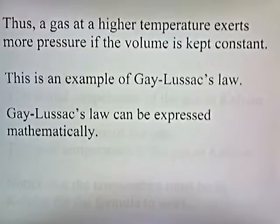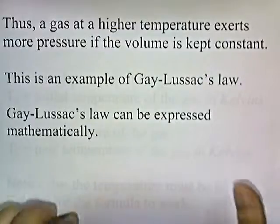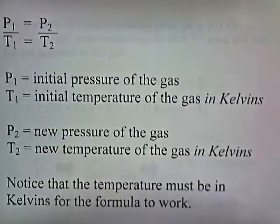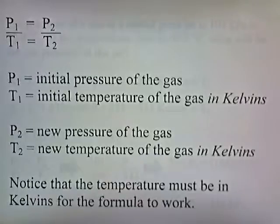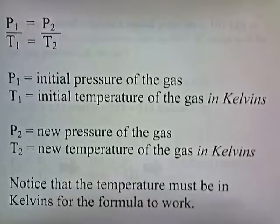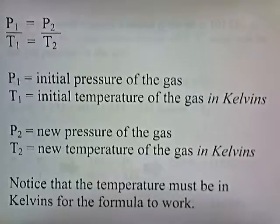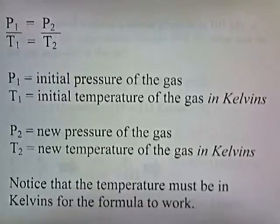This is an example of Gay-Lussac's Law. Gay-Lussac's Law can be expressed mathematically as P1 over T1 equals P2 over T2, where P1 is the initial pressure of the gas, T1 is the initial temperature of the gas in kelvins, P2 is the new pressure of the gas, and T2 is the new temperature of the gas in kelvins. Notice that the temperature must be in kelvins for the formula to work.